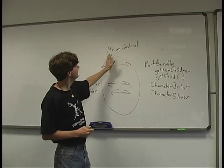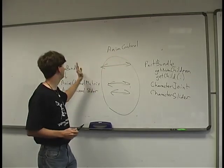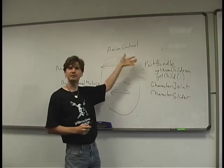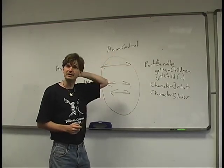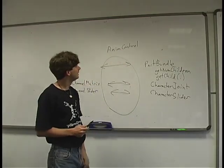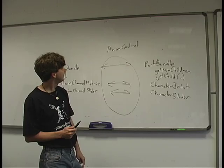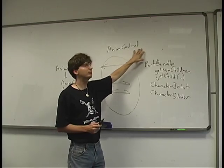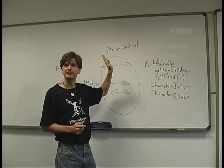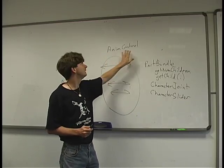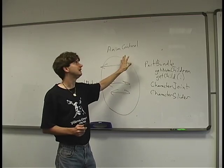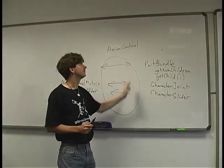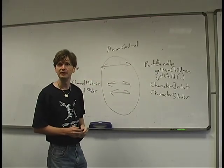An AnimControl is created for each binding of animation to part, and those controls get stored in the character for reuse. Importantly, when you call animControl.play(), if you never parent your actor into the scene, the AnimControl isn't actually doing anything — it's a passive play. Next time the actor gets rendered, it looks at the elapsed time since the last render and recomputes vertices accordingly. The actual cost is in rendering the animated character, not in calling animControl.